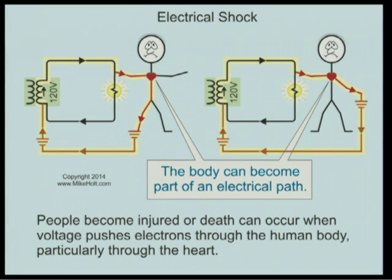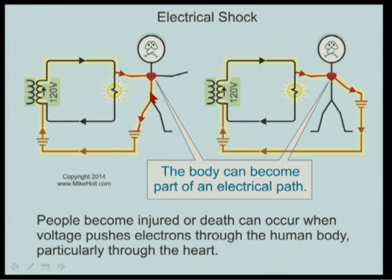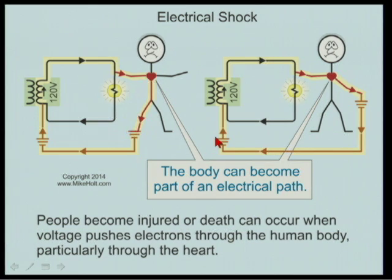Let's go back to this graphic. If I show a voltmeter across this light bulb, the reading would be 120 volts, and the voltmeter across this human would also be 120 volts. You can get shocked from hand to foot with a conductive path to the earth, or from hand to hand, making a conductive path back to the earth.